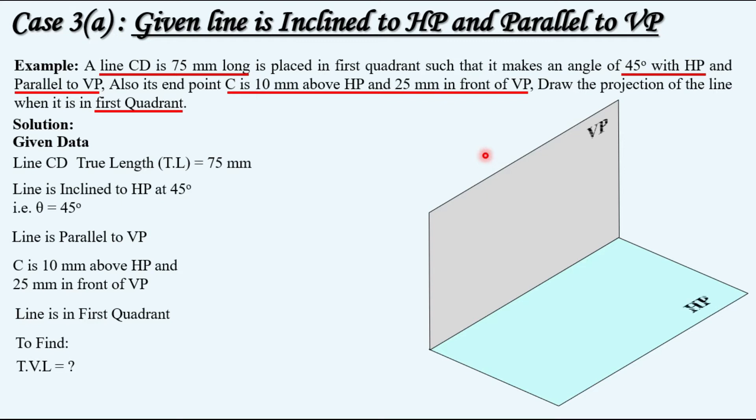Let's visualize the question. So we have the horizontal and vertical planes like this. We are looking from this direction. It is 25 mm in front of VP and 10 mm above HP. You have a point named C. The line which is mentioned is having an angle of 45 degrees with HP in this manner, and the true length is there from C to D, that is 75 mm.